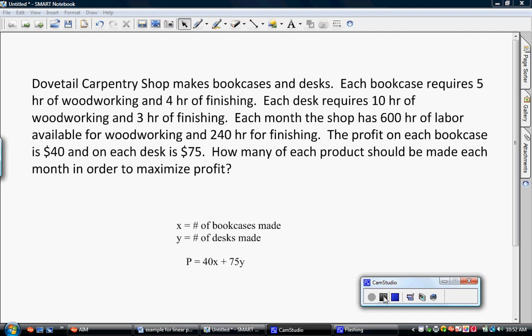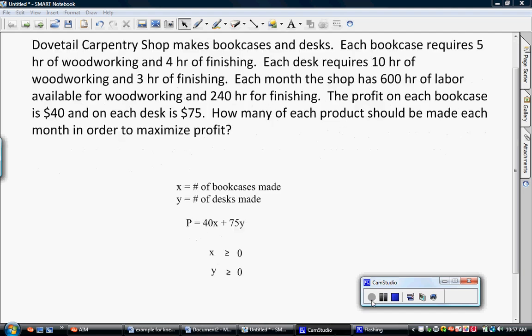Now we have to start trying to figure out the rest of our constraints. Each equation should have an x and a y in it. Each equation should be talking something about the desk and the bookcase. When we read the second sentence and it says that each bookcase requires five hours of woodworking and four hours of finishing, sometimes students want to write an equation involving woodworking and finishing in the same equation. Woodworking and finishing are not our variables. Bookcases and desks are our variables.